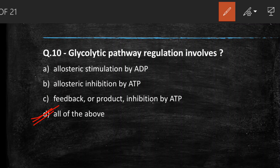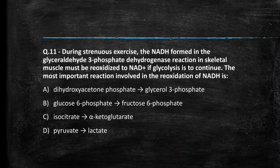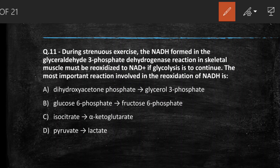Next question: during strenuous exercise, the NADH formed in the glyceraldehyde-3-phosphate dehydrogenase reaction in skeletal muscle must be reoxidized to NAD⁺ for glycolysis to continue. The most important reaction involved in this reoxidation is — (A) DHAP converted to glycerol-3-phosphate, (B) glucose-6-phosphate to fructose-6-phosphate, (C) isocitrate to alpha-ketoglutarate, (D) pyruvate converted to lactate. The right answer is option D — NADH donates H⁺ to pyruvate to produce lactic acid and becomes NAD⁺ (gets oxidized).